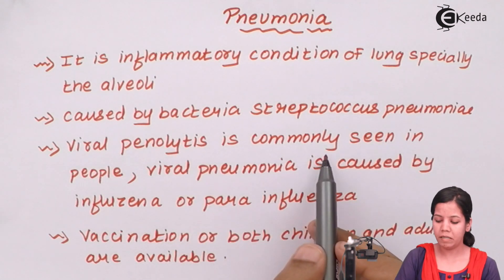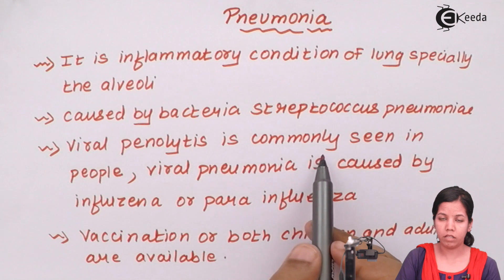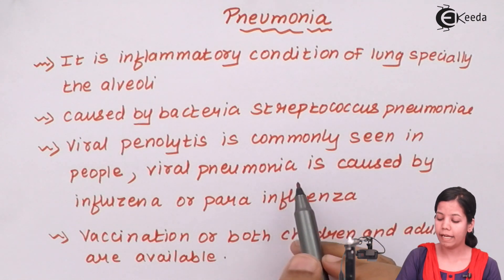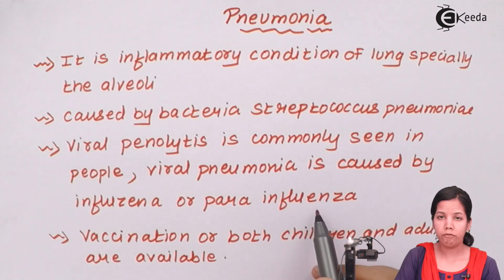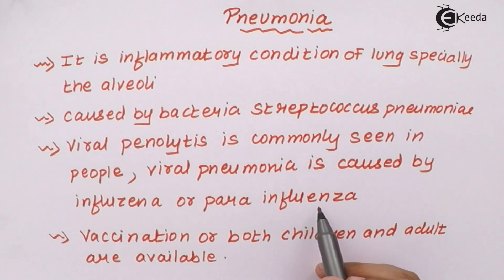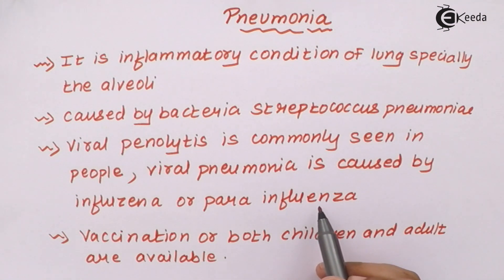Viral pneumonia is caused by para-influenza viruses and is commonly seen in others. Viral pneumonia is similar to a common cold — it is caused when your immune system is at a slight downfall, and it comes and goes within a certain period of time, causing certain symptoms.